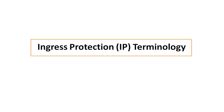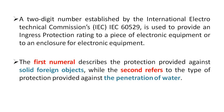In this video, I will discuss ingress protection terminology for electronic components or enclosures of electronic components that give protection against solid foreign objects and water penetration. This is commonly known as IP rating. According to the International Electrotechnical Commission IEC 60529, there is a two-digit number allocated for determining the IP rating of a device — electronic equipment or an enclosure of electronic equipment — that gives protection against solid foreign objects and water penetration.